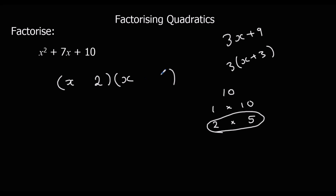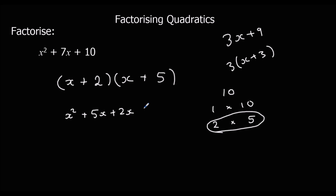In these two brackets we're going to have a two and a five. How can we make seven out of these? Well, plus two plus five is seven. So if I expanded this, I'd get x times x — x squared — x times five — five x — two times x — two x. So I have x squared plus five x plus two x plus two times five, which is ten. So x squared plus seven x plus ten. This is the factorised version.